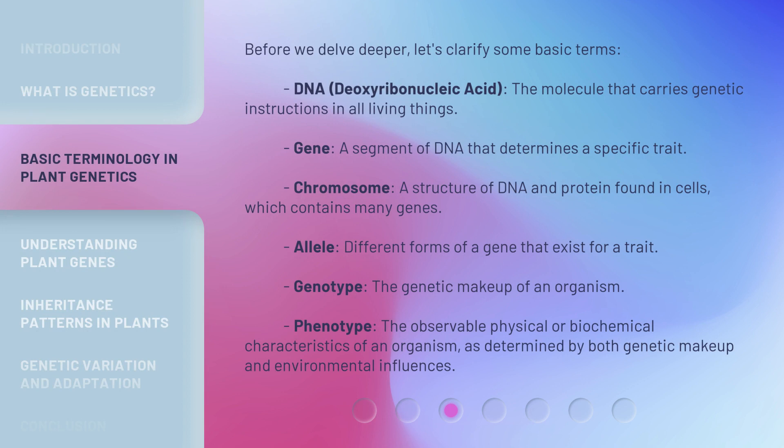Before we delve deeper, let's clarify some basic terms. DNA — deoxyribonucleic acid — is the molecule that carries genetic instructions in all living things. A gene is a segment of DNA that determines a specific trait. A chromosome is a structure of DNA and protein found in cells, which contains many genes.